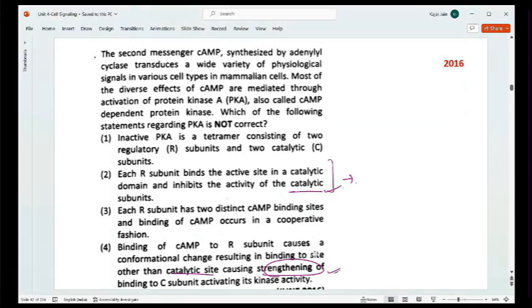Read the question carefully. Option number four, binding of cAMP to R subunit causes a conformational change resulting in binding to the site other than the catalytic site causing strengthening of the binding to the C subunit. Does there occur or is there a strengthening of binding of R and C after cAMP binds to it? You need to find out the incorrect option, not the correct one. You had to find out the incorrect option. Those of you are marking the answer as option number two.